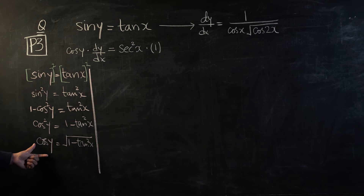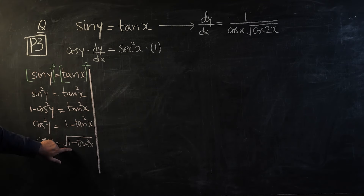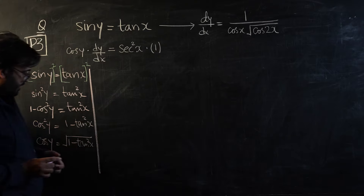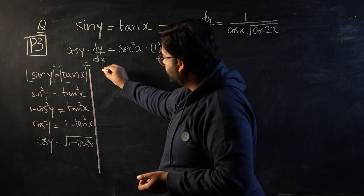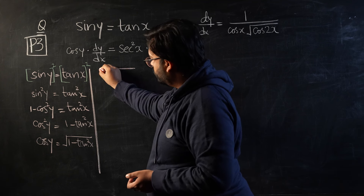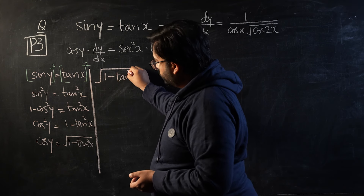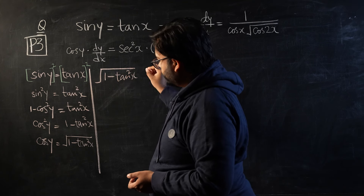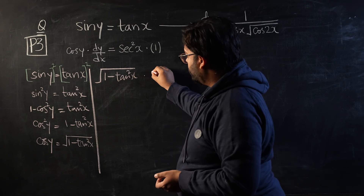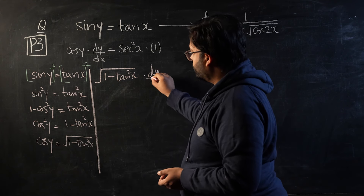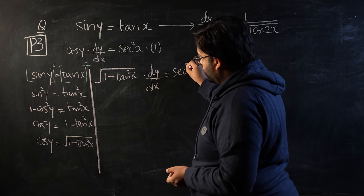Now I know that if I want to replace cos y, this would be the square root of 1 minus tan squared x. So let's bring that over and place it into our differentiation equation. This gives us the square root of 1 minus tan squared x, times dy/dx, equals secant squared x.